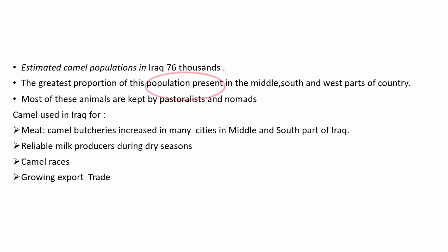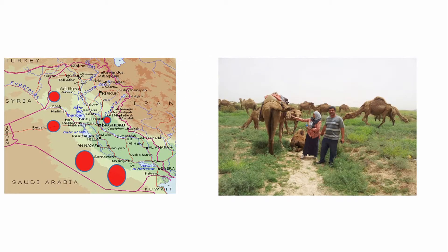The estimated population of camels in Iraq is around 67,000. The greatest portion of this population is in the middle, south, and west parts of the country. Most animals are kept by pastoralists and nomads and are used for meat and milk, with traditional use of camel milk for treating diabetes patients. There is also camel racing and a growing export trade. The highest populations are in Samawa and Nasiriyah in Al-Muthanna governorate, with smaller numbers in Baghdad.